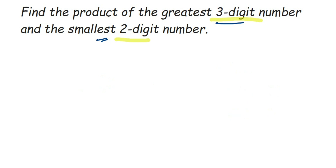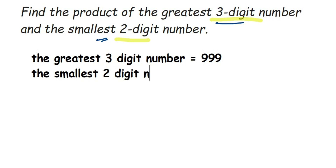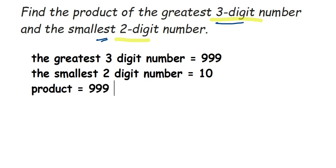So the greatest three-digit number is 999, and the smallest two-digit number is 10. Now we find the product by multiplying these two numbers: 999 multiplied by 10 equals 9990. So 9990 is the answer.